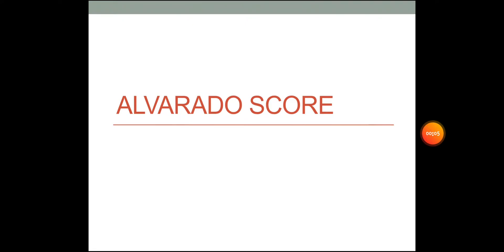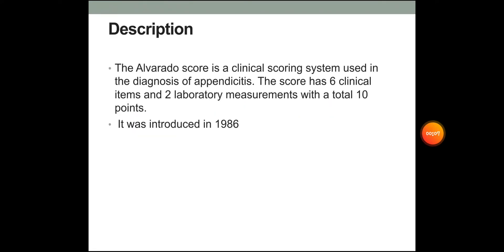Hello everyone, today we will be talking about the Alvarado score. The Alvarado score is a clinical scoring system used in the diagnosis of appendicitis. The score has 6 clinical items and 2 lab measurements with a total of 10 points. It was introduced in 1986.